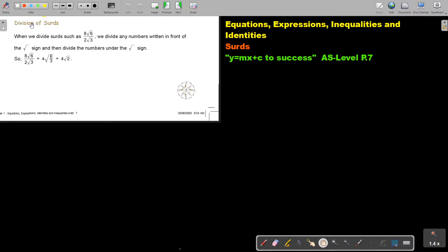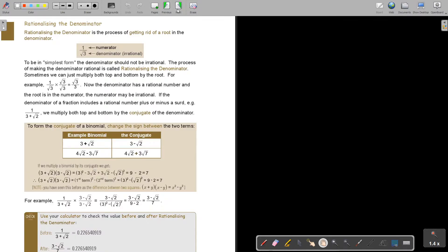In this video we are going to focus on division of surds. When we divide surds, we divide any number written in front of the root sign and then divide the number under the root sign. So basically I can say I divide by 2 and that's 4, and I can make one root for 6 divided by 3 and I get 2. So that's not difficult.